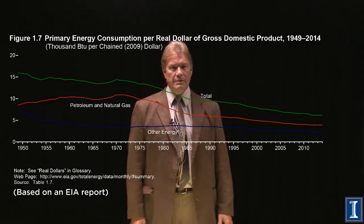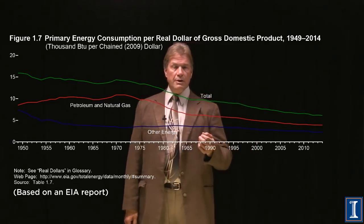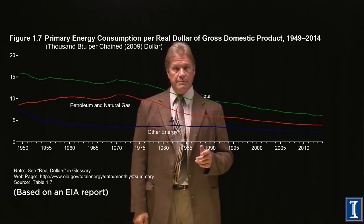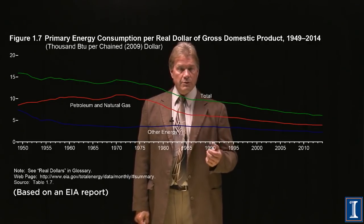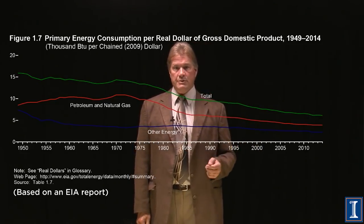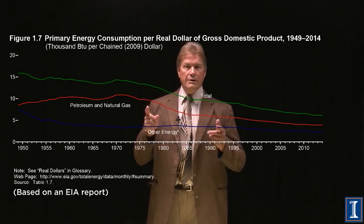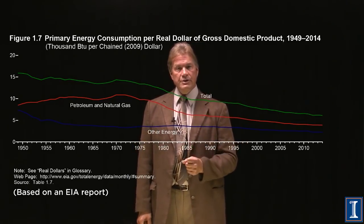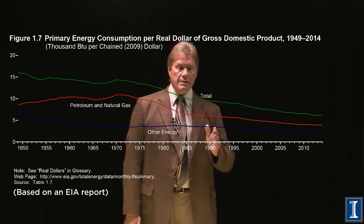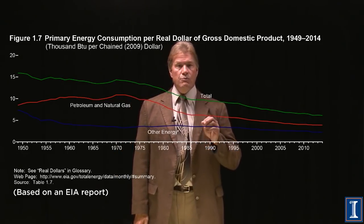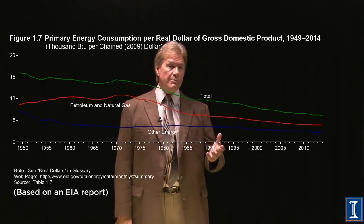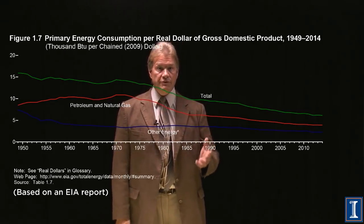How has this happened? And could the rest of the world also become as efficient? The graph of something like this for Europe looks very similar, and even in many of the developing world countries, they have become a bit more efficient per GDP over time. The real key is to understand where we can have gains in efficiency so that we can use energy more wisely.